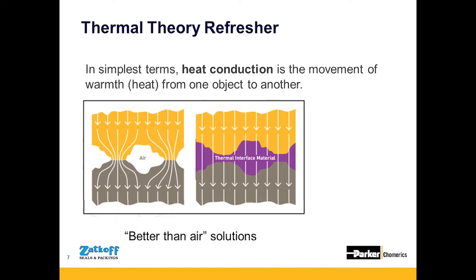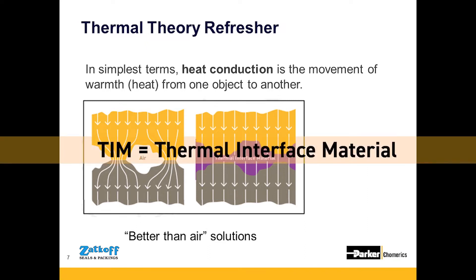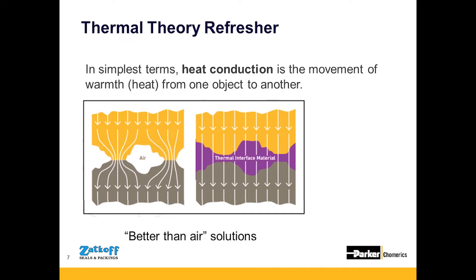Thermal theory refresher: thermal interface materials are meant to serve at the interface between a heat-generating component and a cold plate or cooling feature. They are better than air solutions because air is a good insulator. Throughout this presentation, we will refer to thermal interface materials as TIMs. TIMs use conduction to pull heat away, relying on contact between components to remove interstitial air gaps. Densely packed ceramic particles within silicone binders give TIMs excellent durability and thermal conductivity while ensuring electrical insulation.